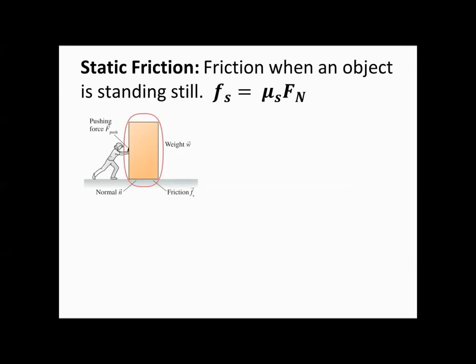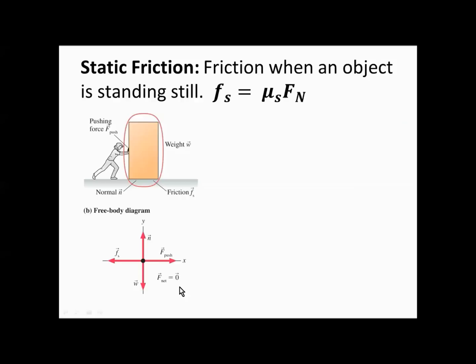The first kind of friction is static friction. This is for an object that's not moving — it's standing still. So you push on an object, it has friction that keeps it from moving. Static friction can be drawn on a free body diagram. We have our applied force, our normal force, our force of weight, and our force of friction going backwards. The force of friction equals the force of the push, meaning the net force on the object is zero and the object is not moving.